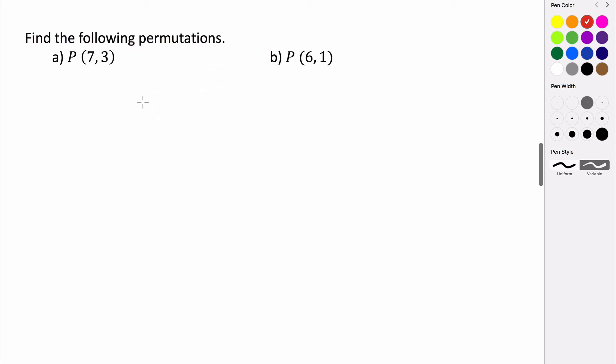Let's find these following permutations. We want to take a permutation of 7 objects taken 3 at a time.